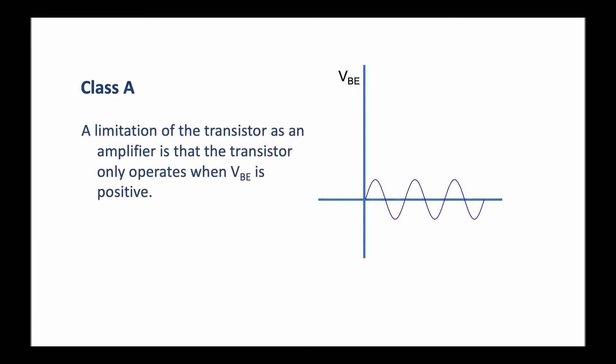One of the limitations of transistors as an amplifier is that the transistor only operates when the voltage between the base and the emitter is positive. We need that forward biased positive voltage at the base in order to collapse the depletion region. The AC input, though, is sometimes positive and sometimes negative. This means that the transistor doesn't operate in the negative half cycle of the waveform. So what happens is if we try to amplify an AC signal with a simple circuit like this, we actually lose or cut off half of the waveform.